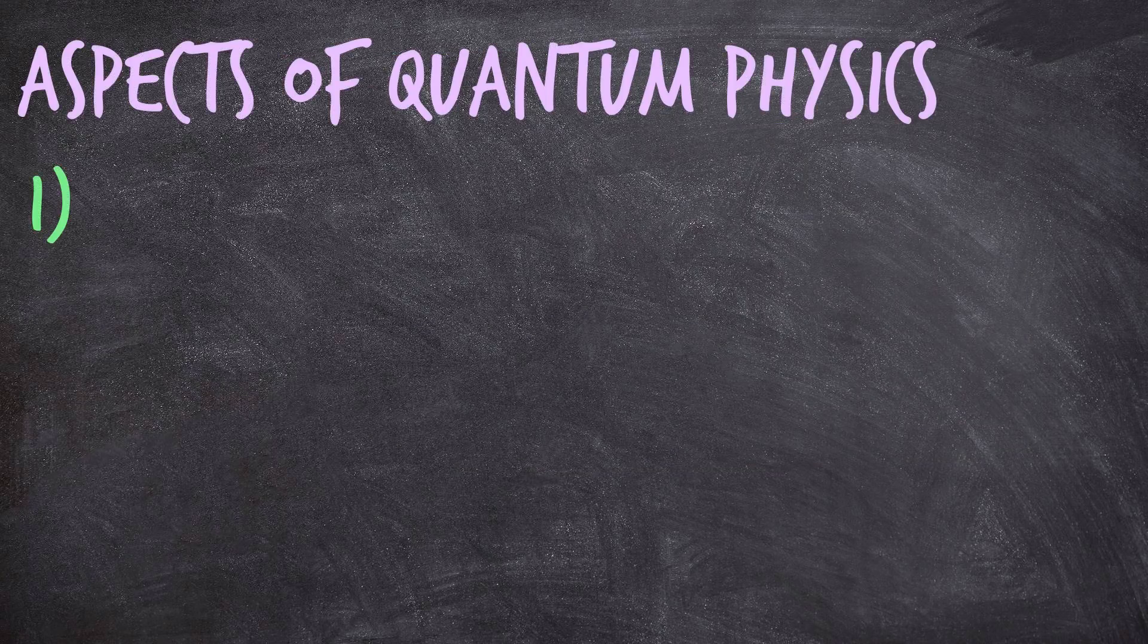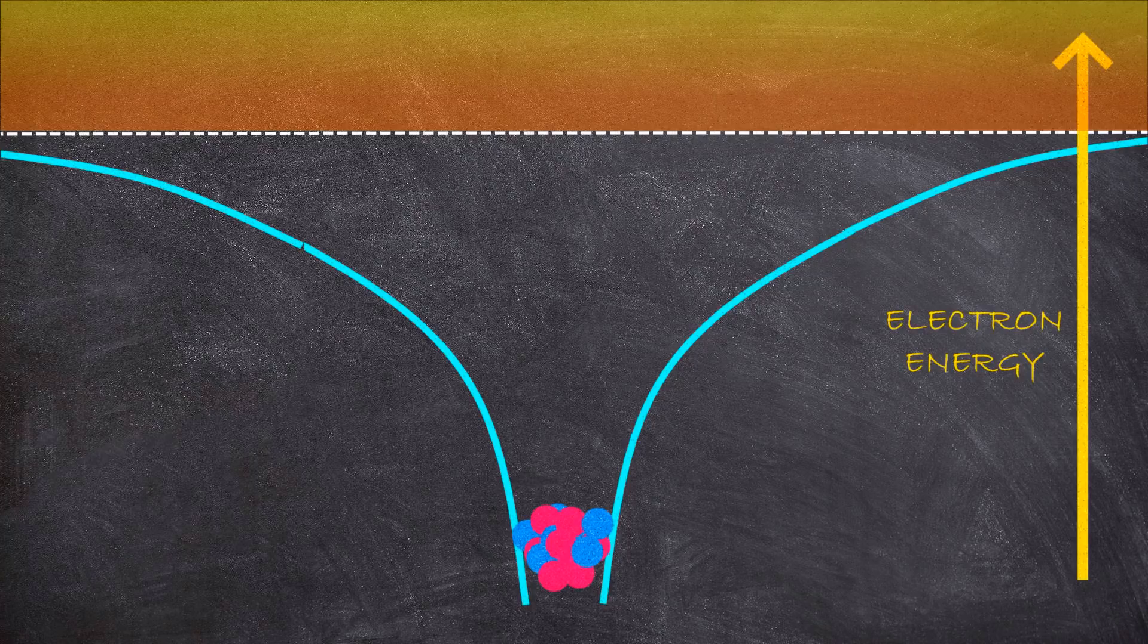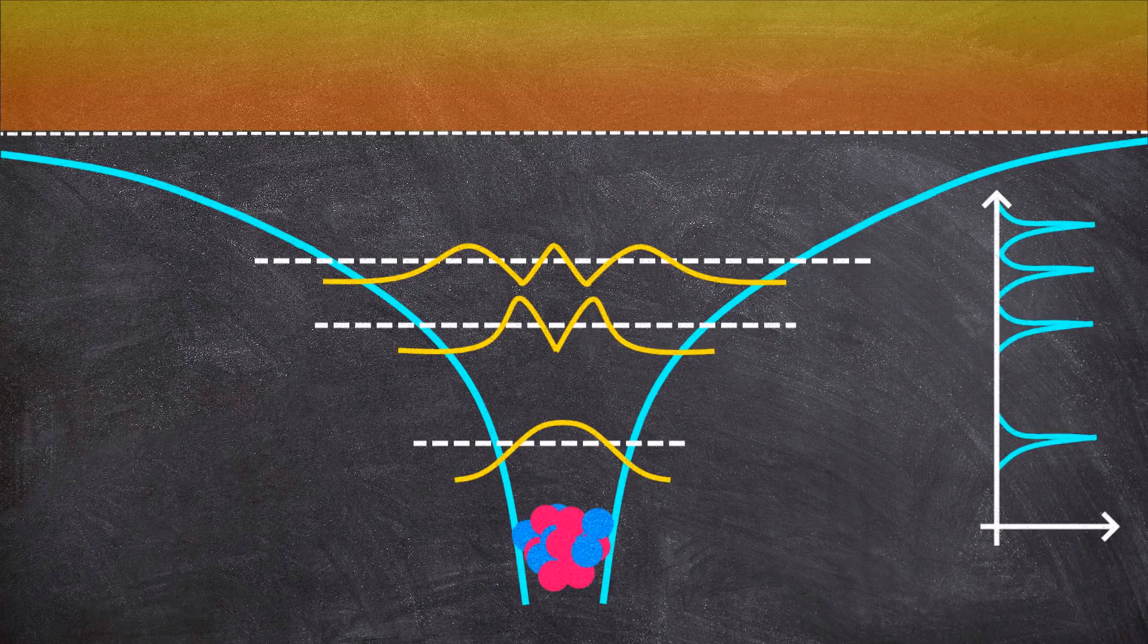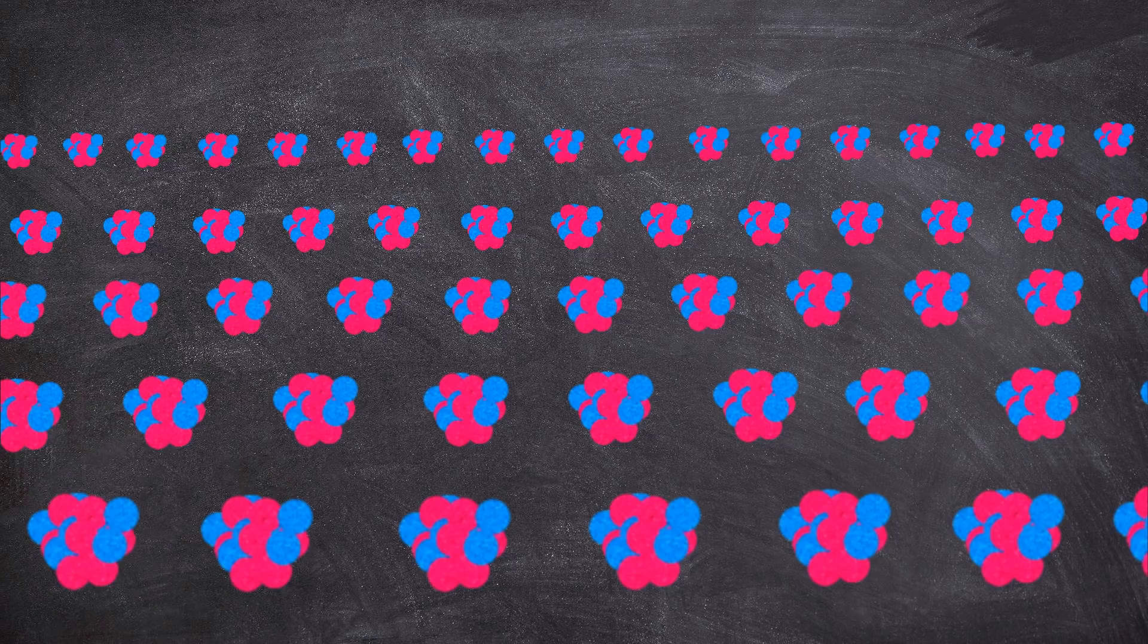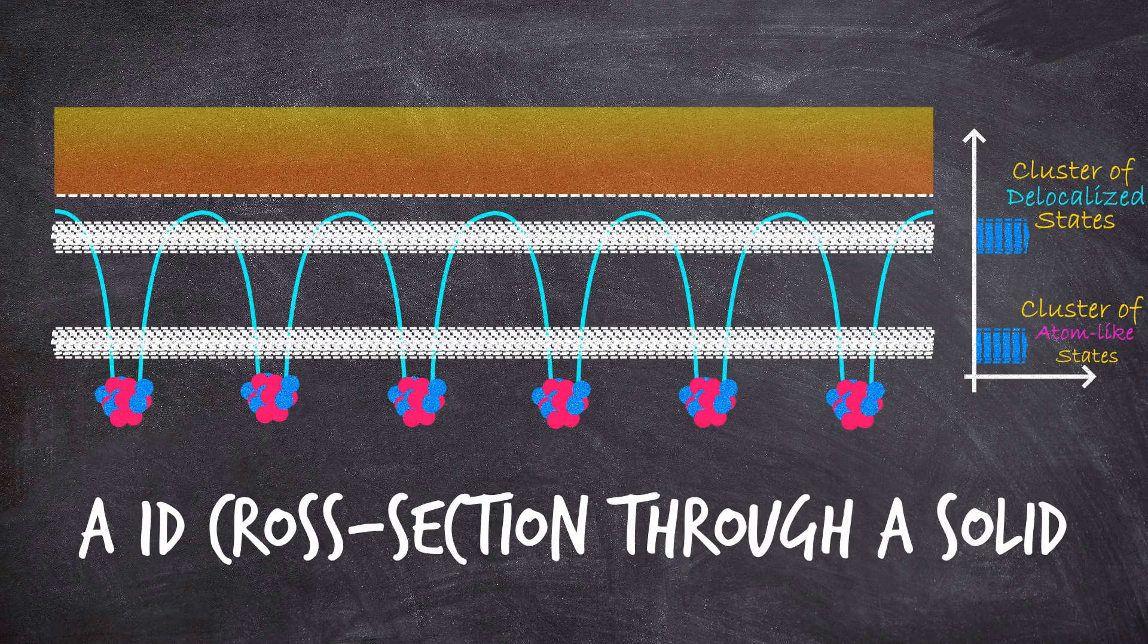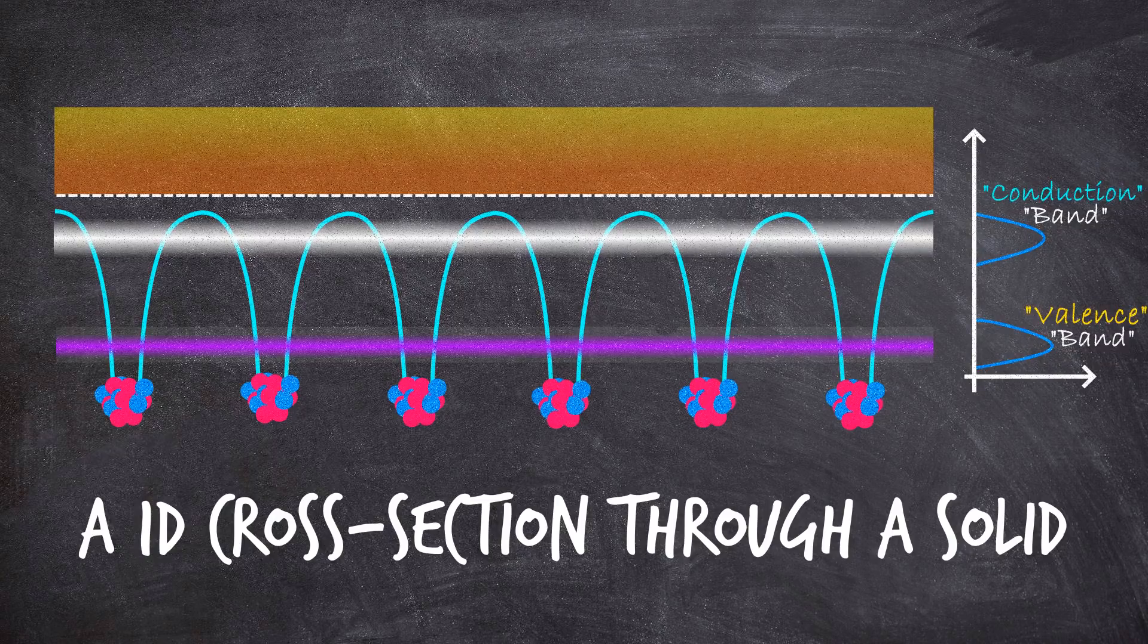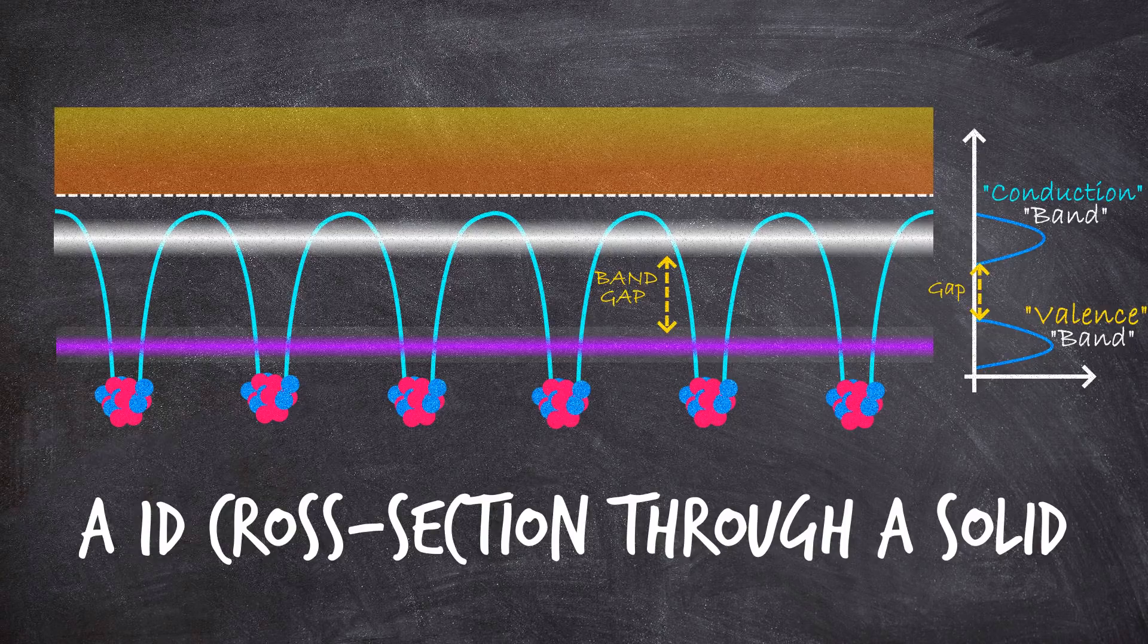The first thing we need to understand is that according to quantum physics, an electron trapped in a lone individual atom can only have certain discrete quantized energies. And an electron in a solid, like a chunk of selenium or silicon, can have a continuum of energies called bands, interspersed with ranges of energies called band gaps, which represent energies that no electron in the solid can have.